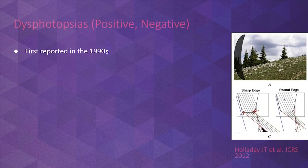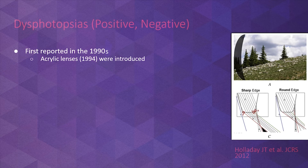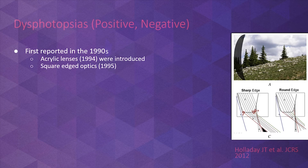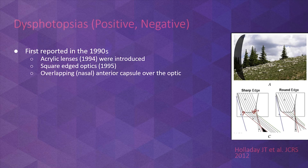Dysphotopsia was first reported in the 1990s, a time when the intraocular lens optic material transitioned from silicone to acrylic. The mid-90s was also a time when the design of the intraocular lens optic changed from a round edge to a square edge design, with the expectation that posterior capsule opacification would be lower with the square edge. It was also when the importance of a continuous capsular rhexis was recognized, and surgeons began increasingly placing the intraocular lens inside the capsular bag.